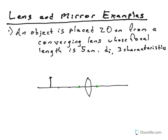Now we need to draw our lines. The first line in red goes parallel to the principal axis to the lens. The lens is drawn a little short — just pretend like the lens is infinitely big. For a converging lens, the first line goes parallel to the principal axis, hits the lens, then bends downwards to go through the focal point. The second line goes straight through the center of the lens without curving. Where these two lines cross, that's my image.